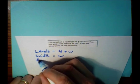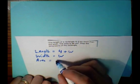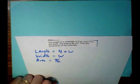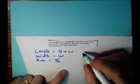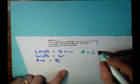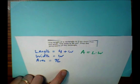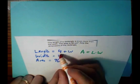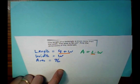It also says that the area is 96. If you remember from geometry, the area of a rectangle, A equals LW, length times width. Now we're just going to plug in, here's my length, and here's my width.